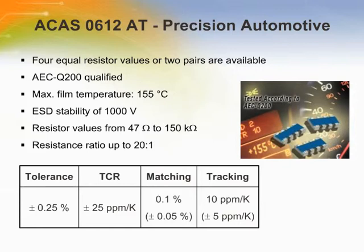The Precision ACAS-0612-AT series is qualified according to the AEC-Q200 standard. This series is optimized to meet new automotive industry requirements, including a maximum film temperature of +155 degrees C and a 1000 volt electrostatic discharge rating. They also offer high temperature cycling and stable performance for industrial, telecommunications, and consumer electronic applications. The ACAS-0612-AT series is offered with resistance values from 47 ohms to 150 kilohms and a maximum resistance ratio of 20 to 1.